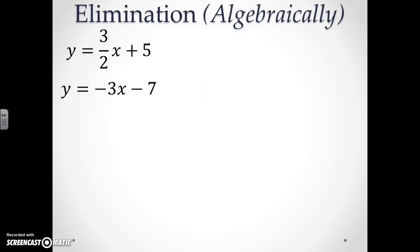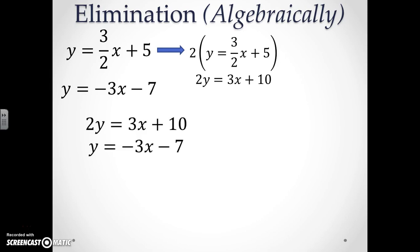Next we will be discussing how to solve a system through elimination. In this case, you will have to multiply one of your equations in order to cancel out a variable. So here it would be best to multiply the first equation by a factor of positive 2 in order to get 2y is equal to 3x plus 10. When we set up our equations and add them together, our variables x will cancel, leaving us with 3y is equal to 3. Then when we solve for y, we get y is equal to 3.